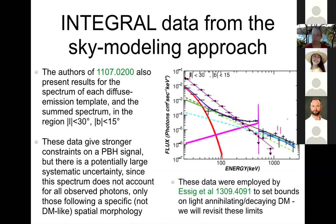You could do something similar with the data from the sky modeling approach, where the authors presented results for the spectrum of each diffuse emission template and the summed spectrum. This does not a priori include all the photons that hit INTEGRAL - it's the sum of photons correlated with various spatial templates. So there is a potential systematic uncertainty in using this spectrum as an upper limit on how many photons the primordial black holes are making, since there was no template for that emission in the fit. Nonetheless, if we use these results we get a stronger constraint. This was the approach used in the 2013 paper by Essig et al. to set bounds on annihilating and decaying dark matter.